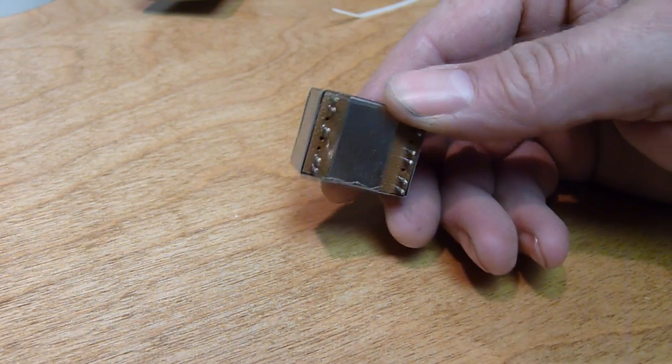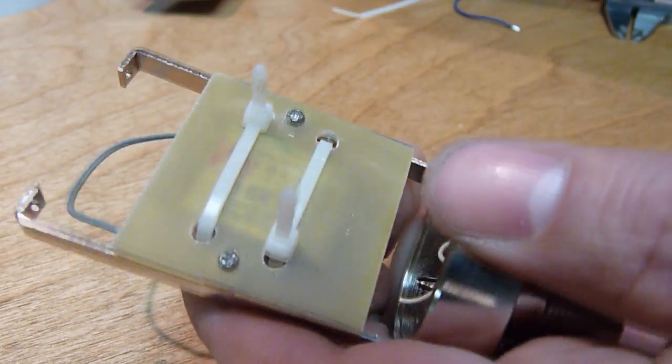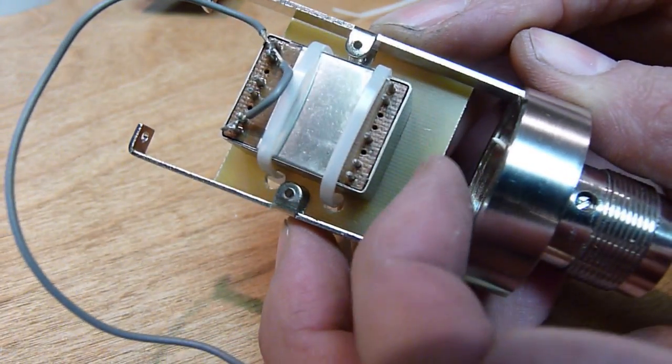Here is the mic transformer. This is a Lundahl microphone transformer made specifically for ribbon mics, and it's a really high ratio. It's something like 1 to 37 step-up transformer.